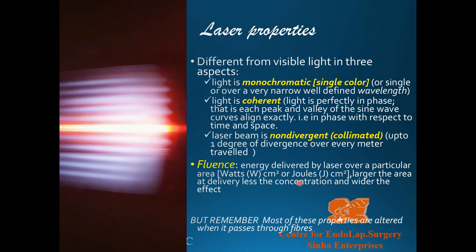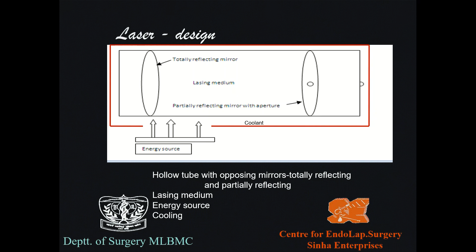The fluence of a laser beam measures the energy delivered by that laser over a particular area, measured in watts or joules per centimeter squared. The larger the delivery area, the less the concentration and the wider the effect. Importantly, most of these properties are altered when the laser is made to pass through a fiber.